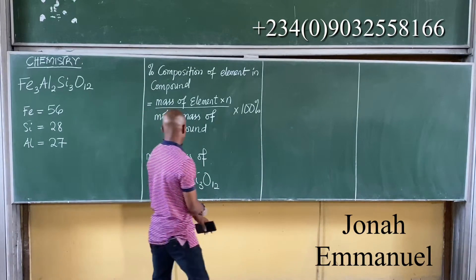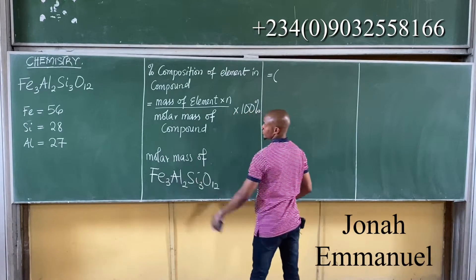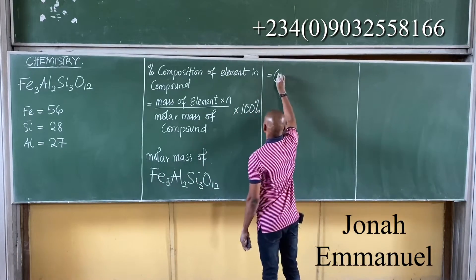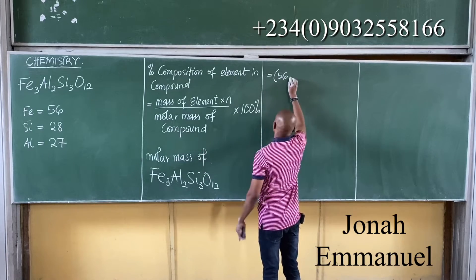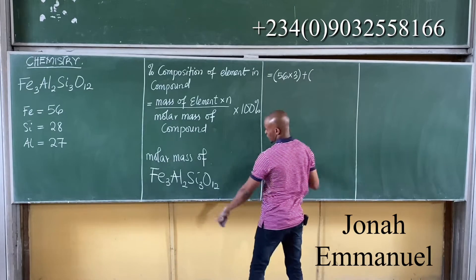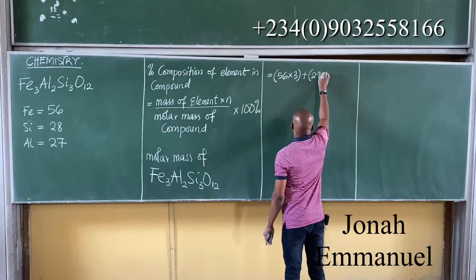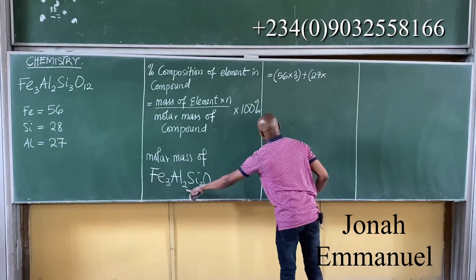The molar mass is equal to iron which is 56 times the number of atoms here, 3, plus for aluminum 27 times the number of atoms here, 2